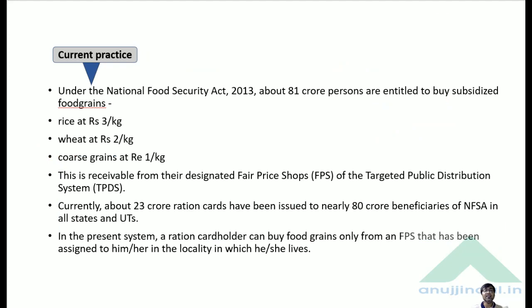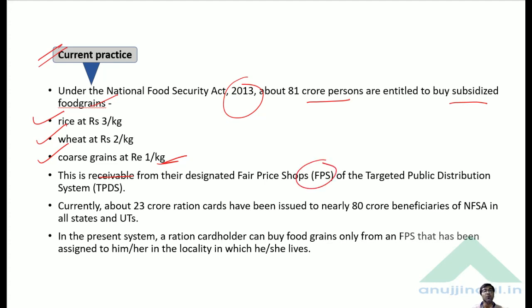Under the NFSA Act of 2013, about 81 crore persons are entitled to buy subsidized food grains — rice at Rs. 3 per kg, wheat at Rs. 2 per kg, and coarse grains at Rs. 1 per kg. This is currently receivable from their designated fair price shop only.